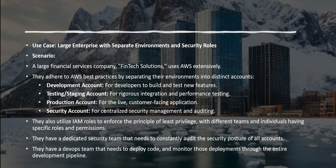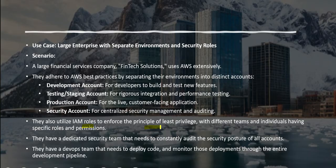Let us imagine a scenario. There is a fintech company and there is a developer there. That developer has access to multiple systems — development, test, and production — and there is a security account where IAM roles are used to manage this using the principle of least privilege. Least privilege means if someone needs to be on the ground floor, they cannot come to the fifth floor — their security access card will not work. It is a large enterprise with separate environments and security rules.